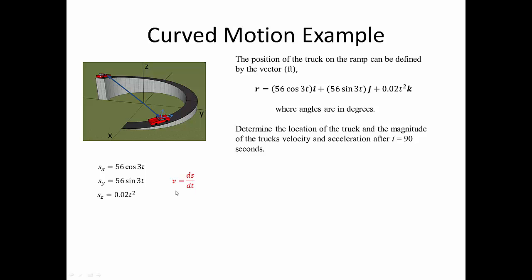We know the position vector and can extract the x, y, and z components. The velocity is given by the derivative of position with respect to time. The velocity in the x direction becomes -3·56·sin(3t), the velocity in the y direction becomes 3·56·cos(3t), and the velocity in the z direction becomes 0.04t.